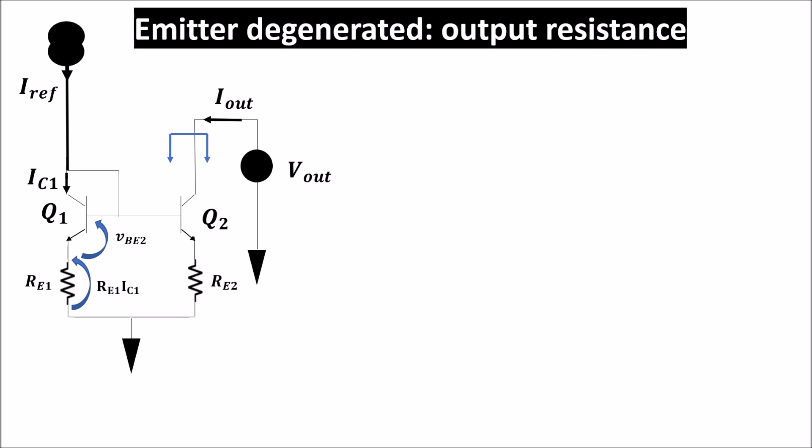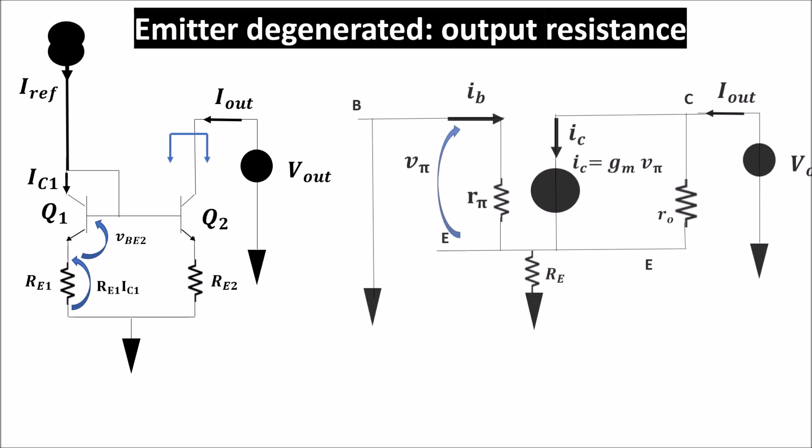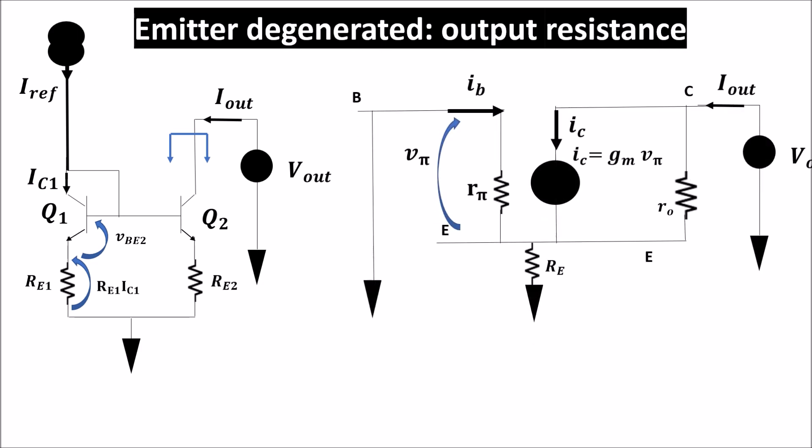In order to calculate it, we draw the small signal model of a degenerated emitter in which we apply the output voltage and we eliminate all the other independent sources. So we put to zero the base of Q2, which is biased by I_ref and Q1 ultimately.